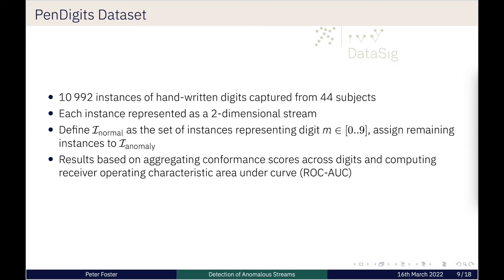The pen digits data set consists of 10,000 instances of handwritten digits from 44 subjects, essentially two-dimensional stream data. We take for each of the possible digits, normal to be one of the digits between zero and nine. We take a subset as our training corpus. Then we evaluate our method by computing the conformance distances with respect to the training corpus for the testing data, which consists of both normal and anomalous data. That gives us a score for each of the streams. We aggregate those scores and compute a performance measure. The performance measure we consider here is the receiver operating characteristic area under the curve.